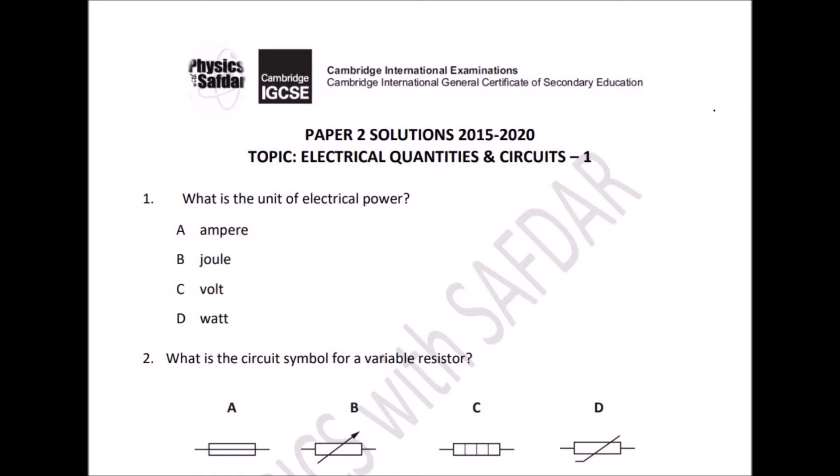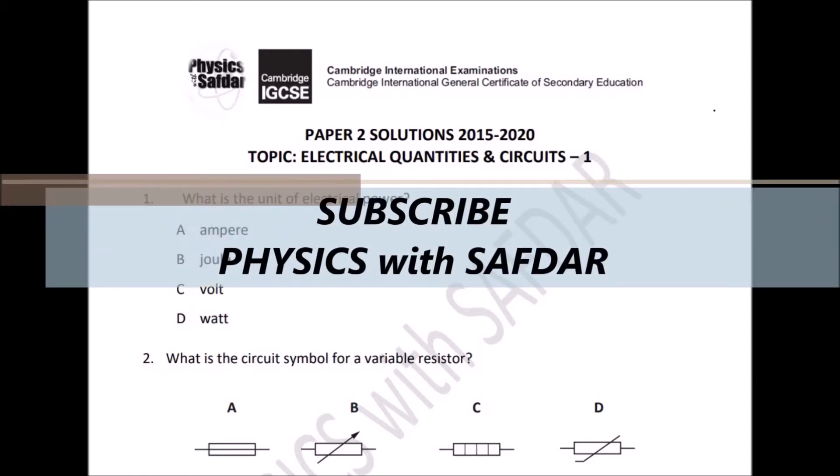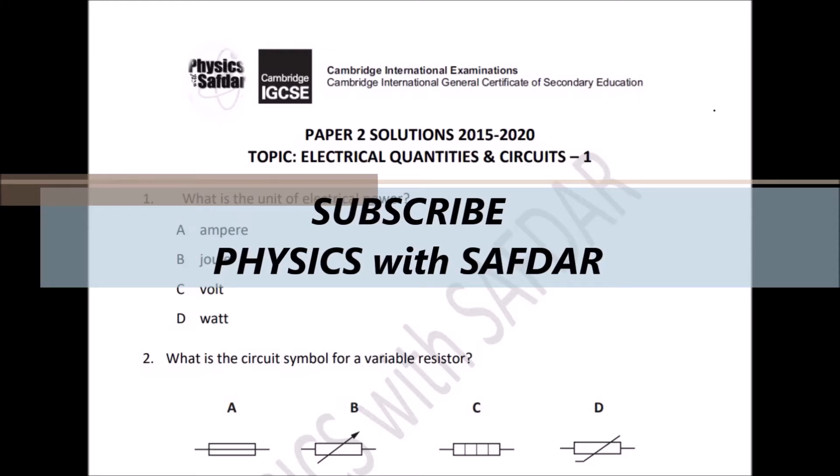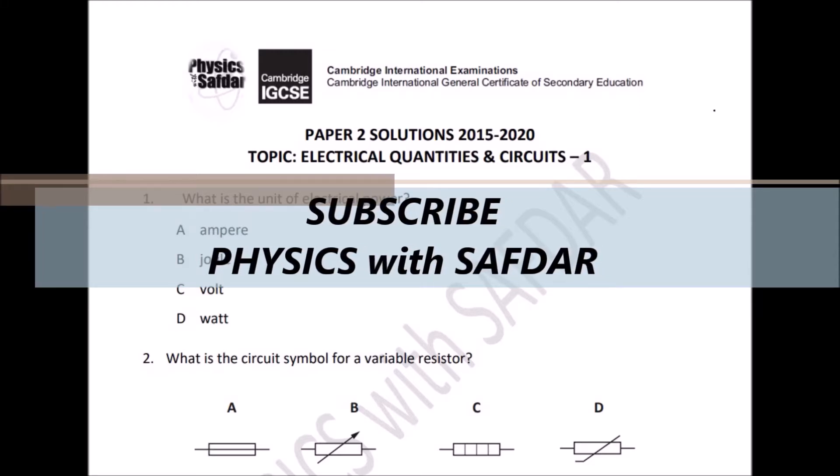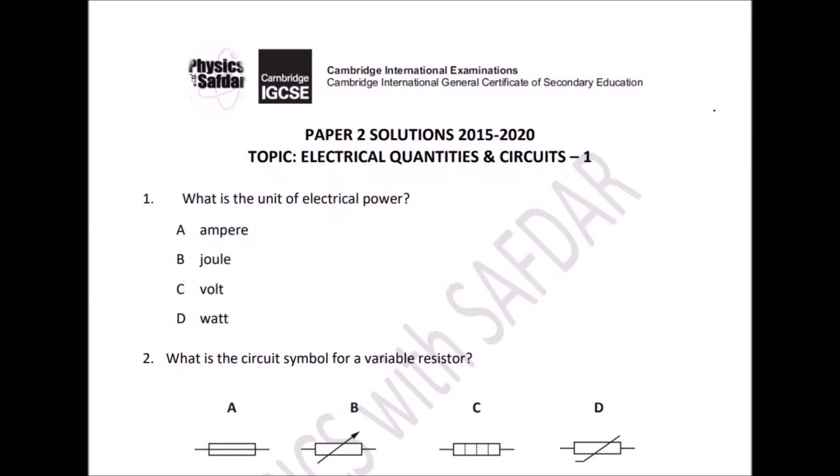Hello students, welcome back to Physics with Safdar. You are watching IGCSE Physics past paper solution series. If you are facing any problem in IGCSE physics, you are at the right place. Here you can find the solutions of your problem. Follow the playlist of the channel and keep in touch with Physics with Safdar for better results in exam. Today we are going to solve Paper 2 solutions on topic electrical quantities and circuits. Let's start the solutions of the day.